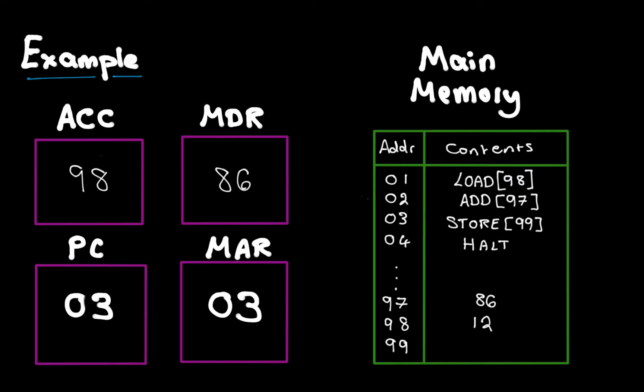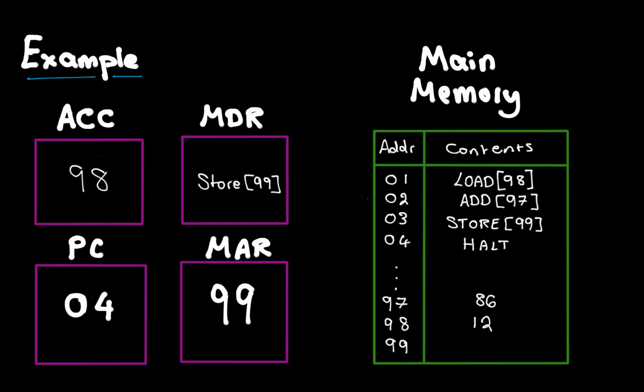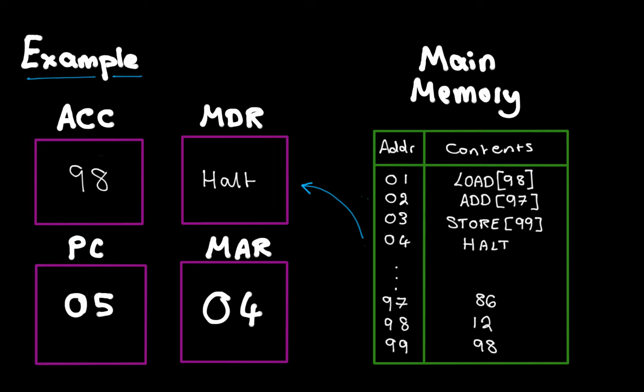Then we copy the program counter into the MAR to process instruction number three, increment the program counter, and go to main memory. We get the instruction 'store 99' — we pop that into the memory data register, put 99 into the memory address register, and the store instruction means to store whatever value is in the accumulator at that address in main memory. So we store 98 at address 99. Then instruction four is 'halt' — when we decode and execute halt, it ends the program.